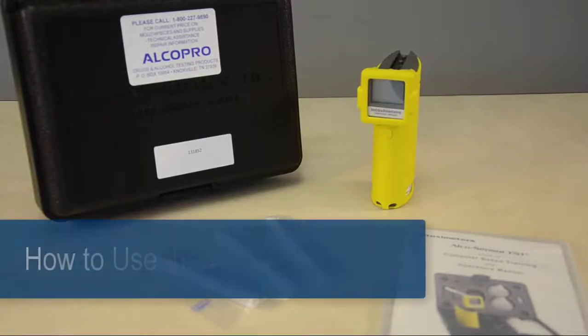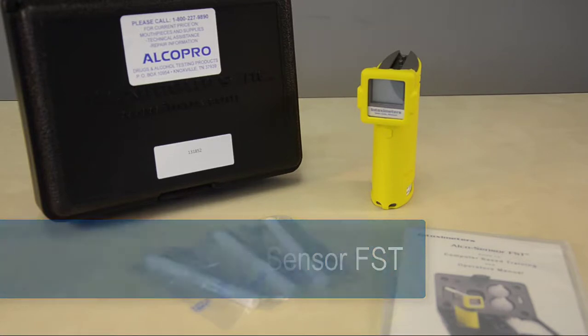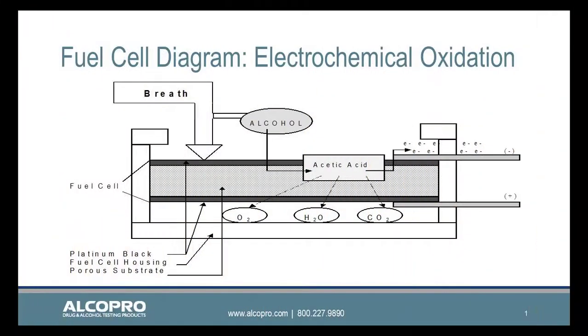The AlkaSensor FST is trusted by law enforcement and substance abuse treatment professionals worldwide to provide accurate and reliable results. The AlkaSensor FST uses fuel cell technology to analyze and convert alcohol molecules to a breath alcohol content result.